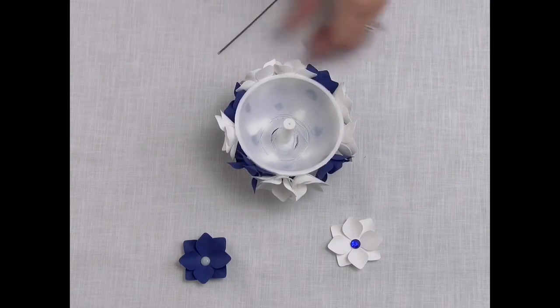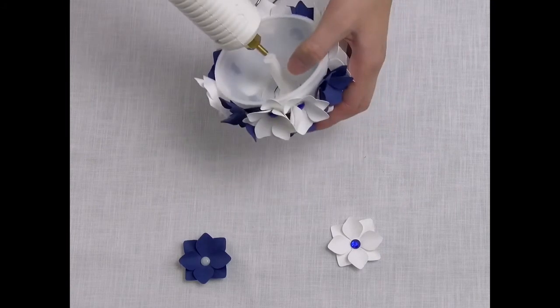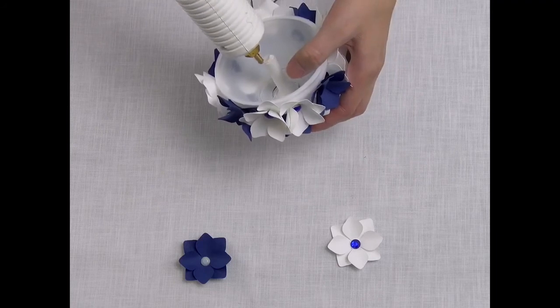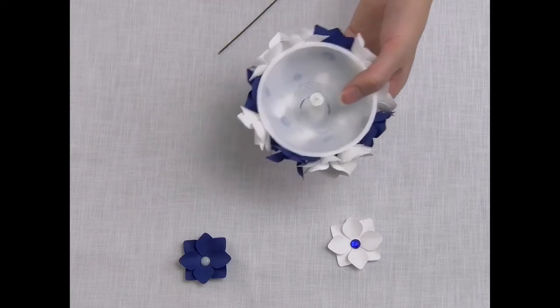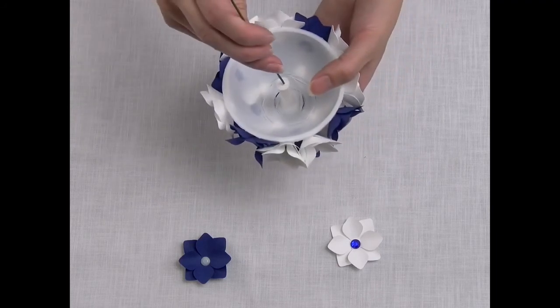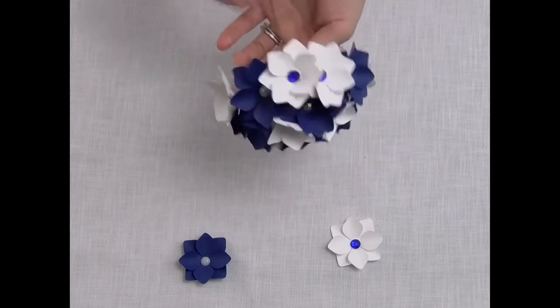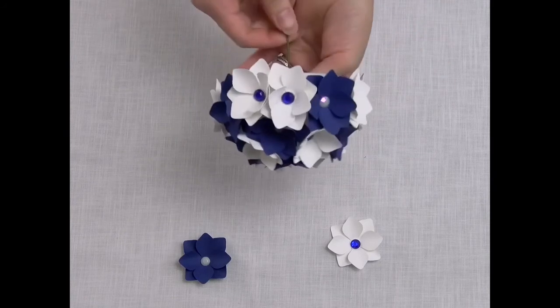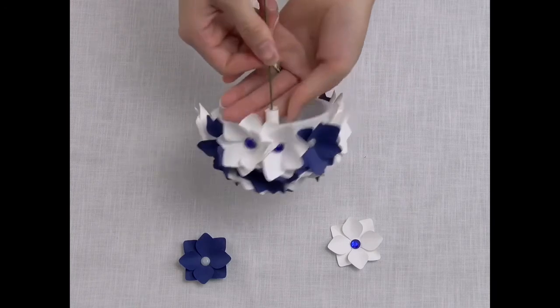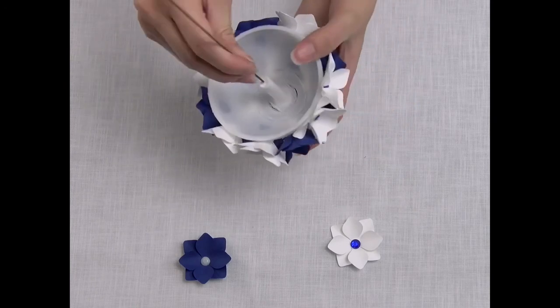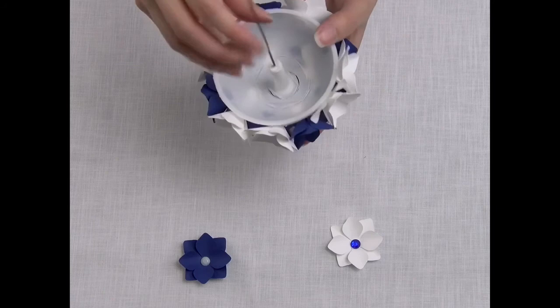And then to stem it, what I would do with the styrofoam ball is place glue down the center. Then I would just shove the stick in and push it in a little bit. Now I just wait for the glue to dry.